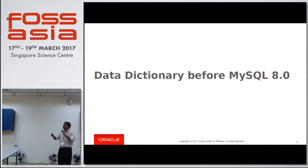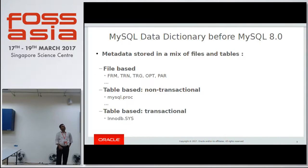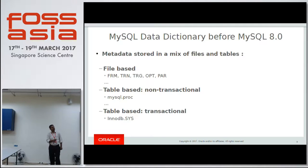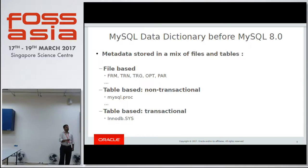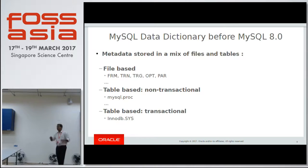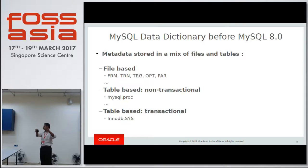Let us look at how metadata is managed before 8.0. In MySQL 5.7, table information is spread across different flat files. Columns are stored in FRM files, triggers are stored in .TRN and .TRG files, schema properties like character sets are stored in a flat file called .OPT, partition information is stored in .PAR, and stored procedure metadata is stored in a MyISAM-based table which is non-transactional. There is also a duplicate copy of the table stored in InnoDB.